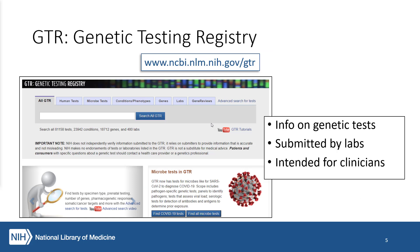The Genetic Testing Registry, or GTR, provides information on genetic tests available on the market. The information is submitted by the labs that offer the tests. The database is intended for clinicians to use to find relevant tests. You can learn about offered tests, filter by purpose, method, certification, location, and other information, and find out how to order the test.